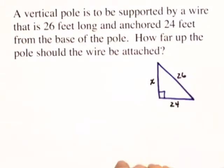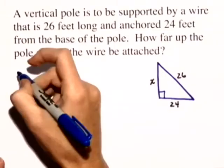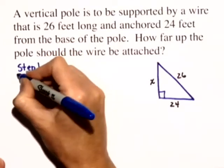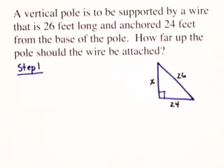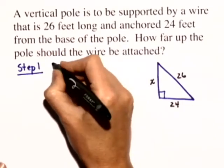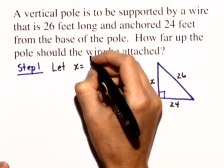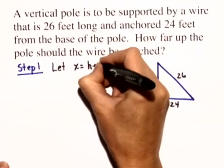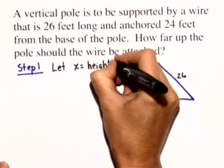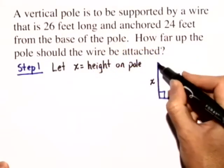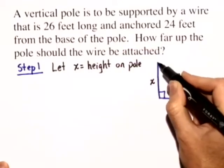So we're going to do some steps here, starting with step one, where we're going to identify any unknown quantities. So X is our unknown quantity, and we'll let X equal the height on the pole at which we should attach this wire.